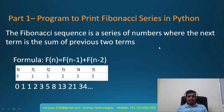What is Fibonacci sequence? Fibonacci sequence is a series of numbers where the next term is the sum of the previous two terms. The formula to calculate Fibonacci sequence is f(n) = f(n-1) + f(n-2).